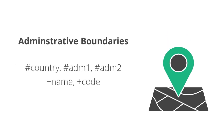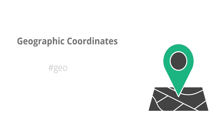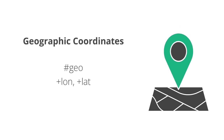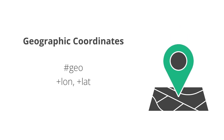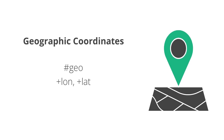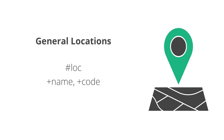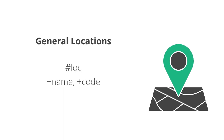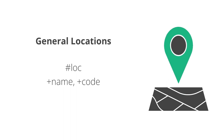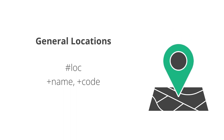To describe administrative boundaries, we use the hashtags country, ADM1, ADM2, and so on, with attributes like plus name or plus code. For geographic coordinates, we use the hashtag GEO and the attributes LON and LAT. And finally, there is the hashtag LOC for general locations that you can further refine with attributes like plus name and plus code.